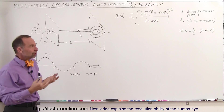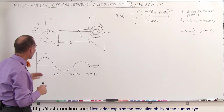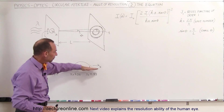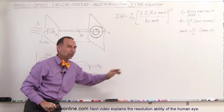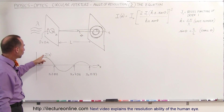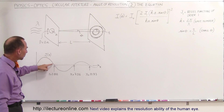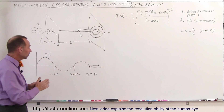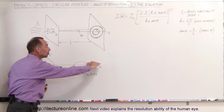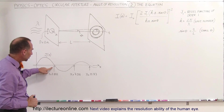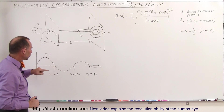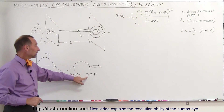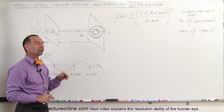The Bessel function is an interesting and somewhat complicated function. When you graph it, it shows an oscillating function that gets smaller and smaller as you go out — kind of like a sine function but with diminishing magnitude. When x equals 3.832, the Bessel function goes to 0. When x equals 7.016, it goes to 0. When x equals 10.173, it goes to 0, and so forth.